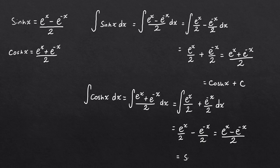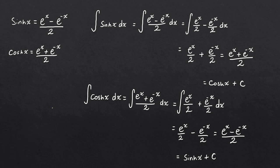So you integrate cosh x with respect to x and you get sinh x, and again with no limits don't forget your constant of integration. Finally, what about integrating hyperbolic tan? This result is the most straightforward at A-level, and we don't actually need to use the exponential definition here for tanh x.